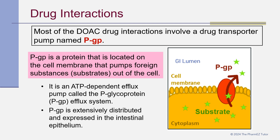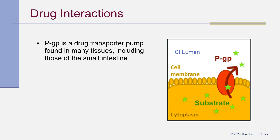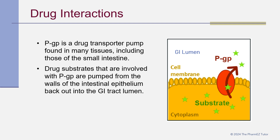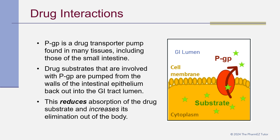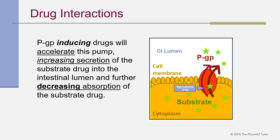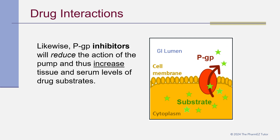PGP is extensively distributed and expressed in the intestinal epithelium. Drug substrates involved with PGP are pumped from the walls of the intestinal epithelium back out into the GI tract lumen, reducing absorption and increasing elimination. PGP-inducing drugs accelerate this pump, increasing secretion of the substrate drug into the intestinal lumen and further decreasing its absorption. Conversely, PGP inhibitors reduce the action of the pump and thus increase tissue and serum levels of drug substrates.